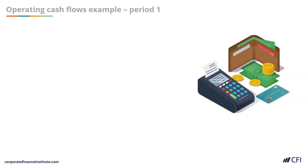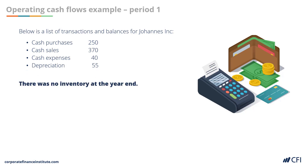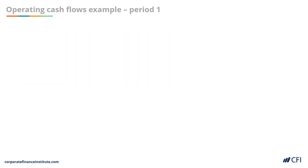We are going to build up the operating cash flow section of the cash flow statement using real numbers and both the direct and indirect methods. Below is a list of transactions and balances for Johannes Inc.: cash purchases of $250,000, cash sales of $370,000, cash expenses of $40,000, and a depreciation expense of $55,000. Additionally, there is no inventory left at the end of the year. If you'd like to test yourself, please download the Excel template called Johannes Periods 1 to 3. Let's work through each transaction individually.